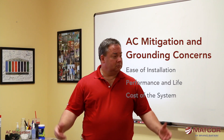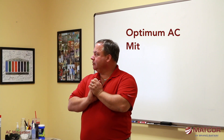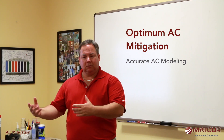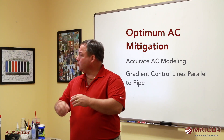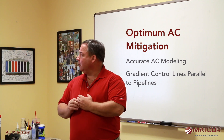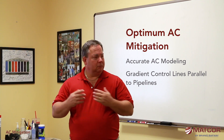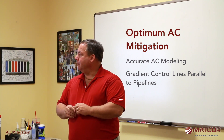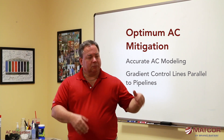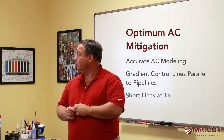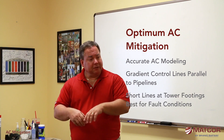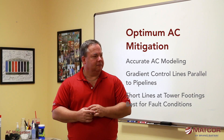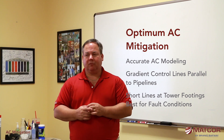Optimum AC mitigation modeling is only as good as the model, so it's really important that the AC mitigation modeling we do is accurate. Gradient control lines parallel to the pipeline are probably the most common grounding system being used right now, although there are quite a few locations using deep anode systems as well. For fault conditions, short lines at the tower footings tend to be an effective mitigation strategy.